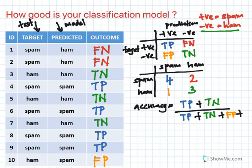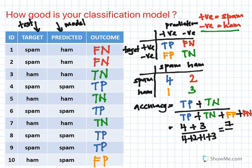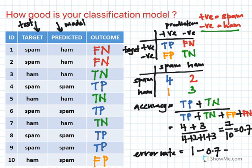Let's calculate: 4 plus 3, divided by 4 plus 2 plus 1 plus 3, which gives us 7 divided by 10, that is 0.7. So 0.7 is your classification accuracy. Once you know classification accuracy, you can find your error rate or misclassification rate: 1 minus 0.7, which equals 0.3.